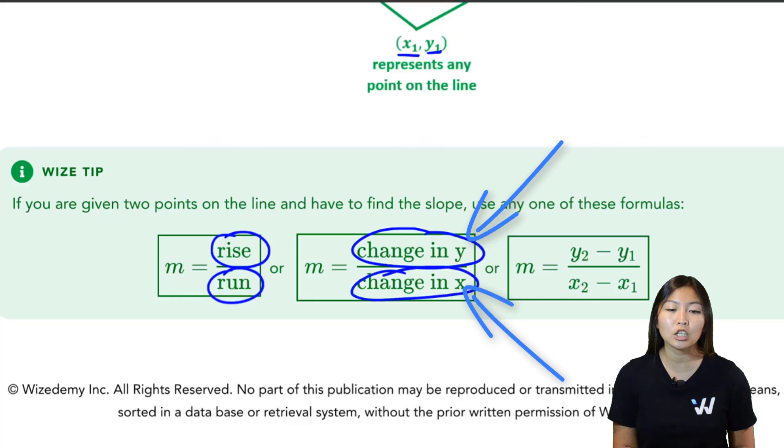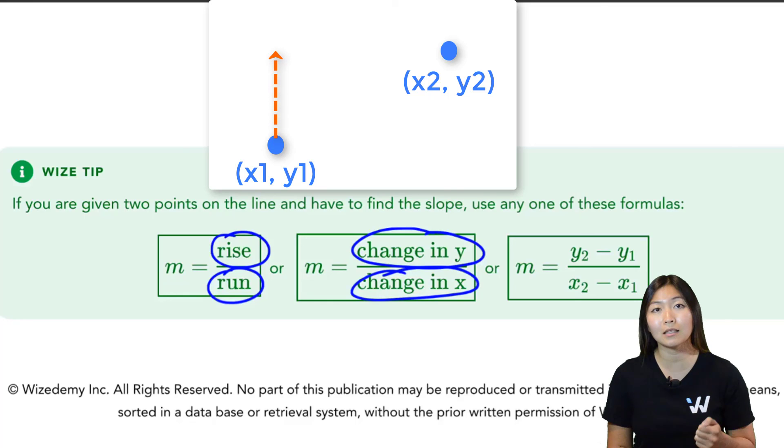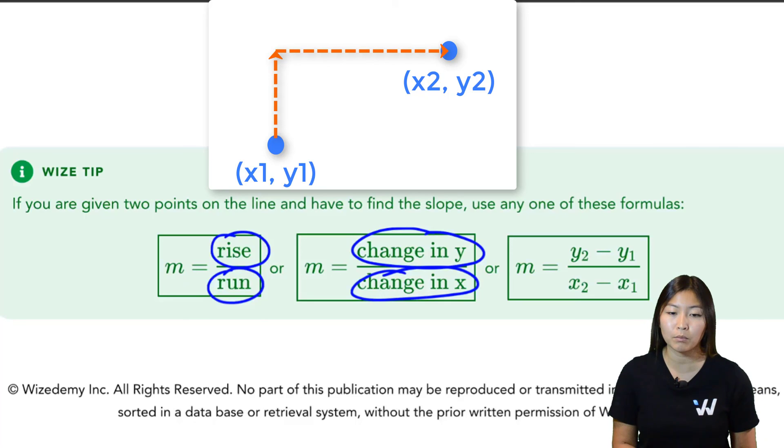So if you're given a graph and you have two points, you're going to take one of the points and you're going to figure out how do I have to change the y to get to the second point, divided by how do I have to change the x to get to the second point. So basically what we're doing is we are calculating y2 minus y1 divided by x2 minus x1, which we'll see some examples of later on.